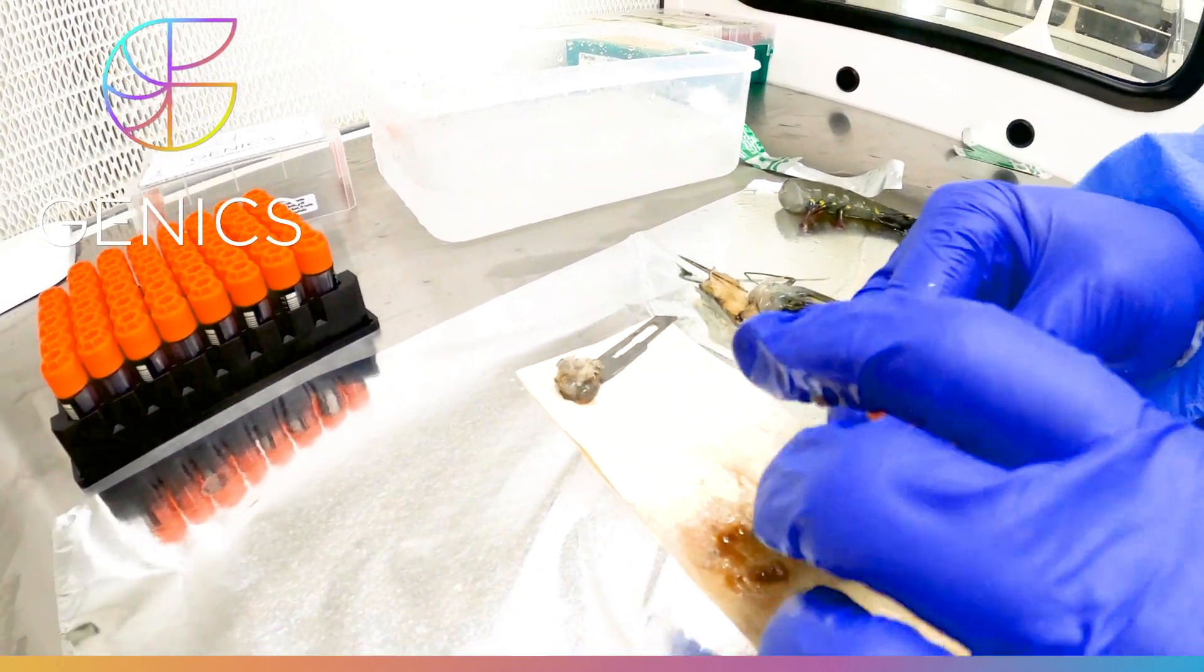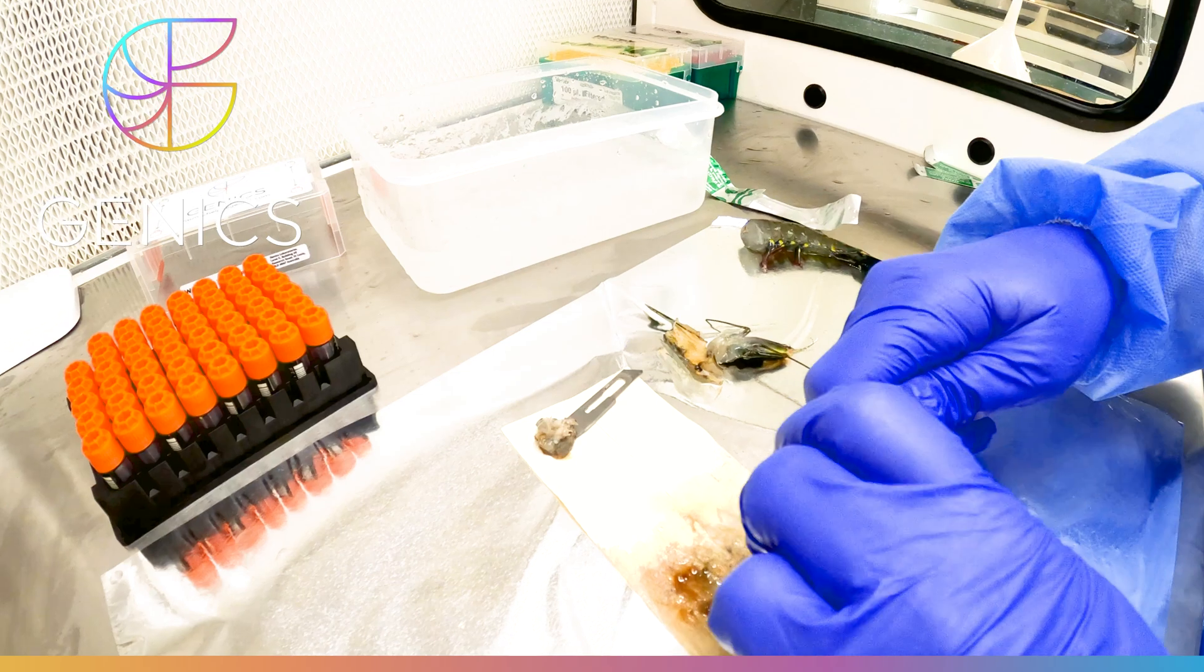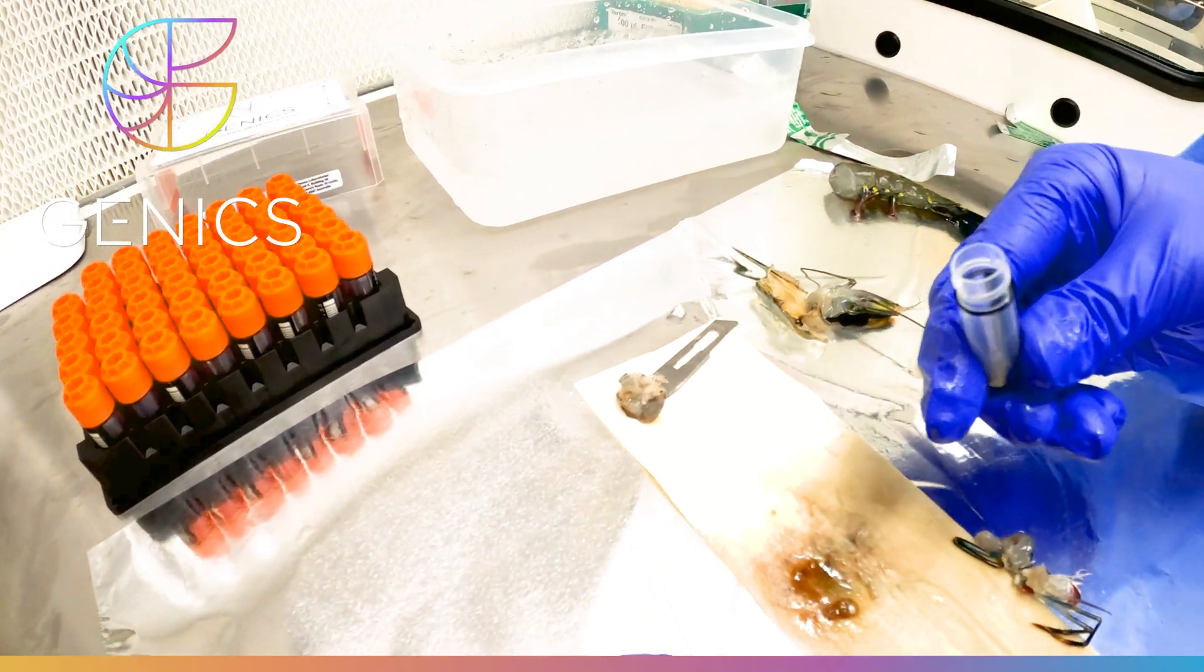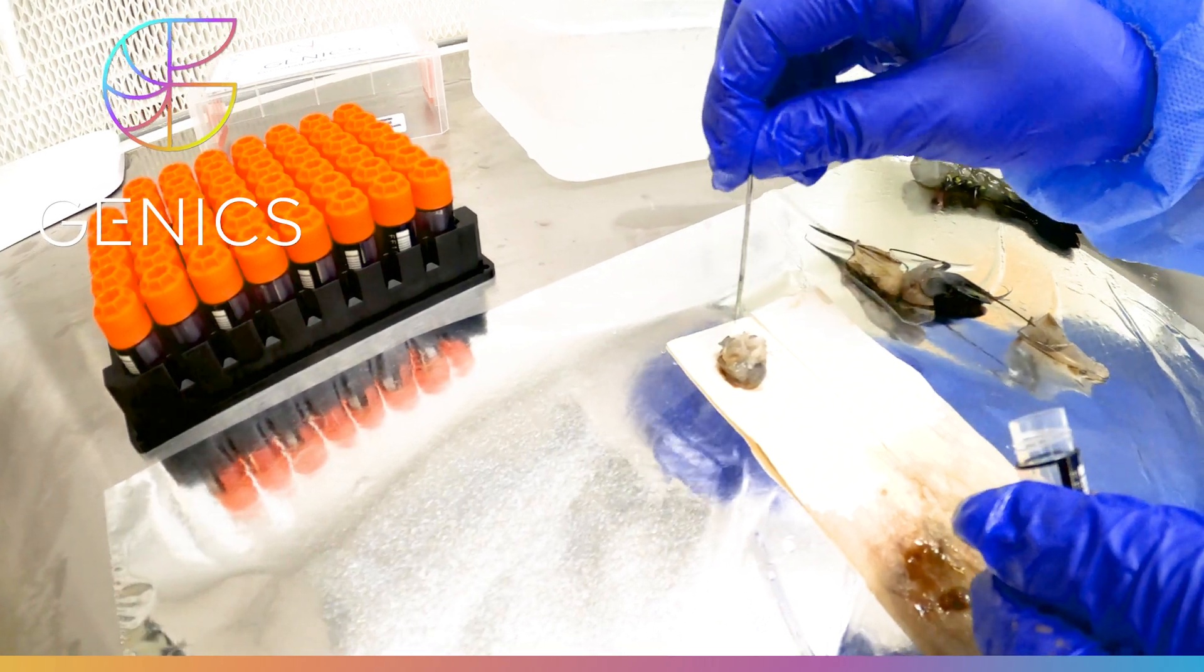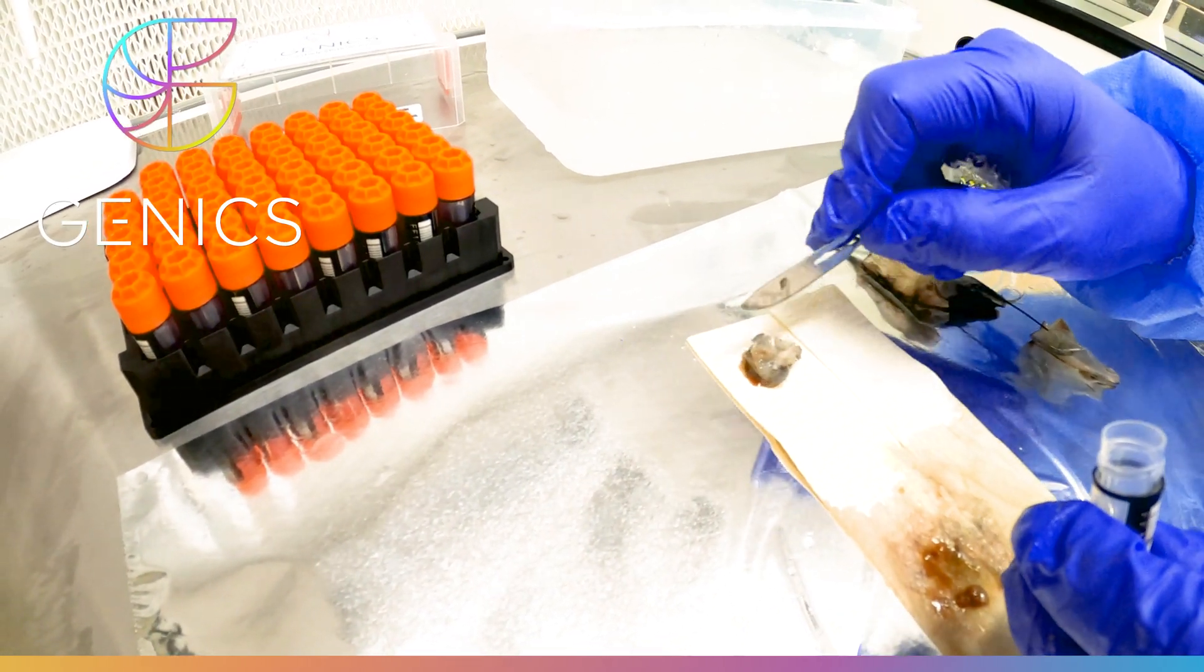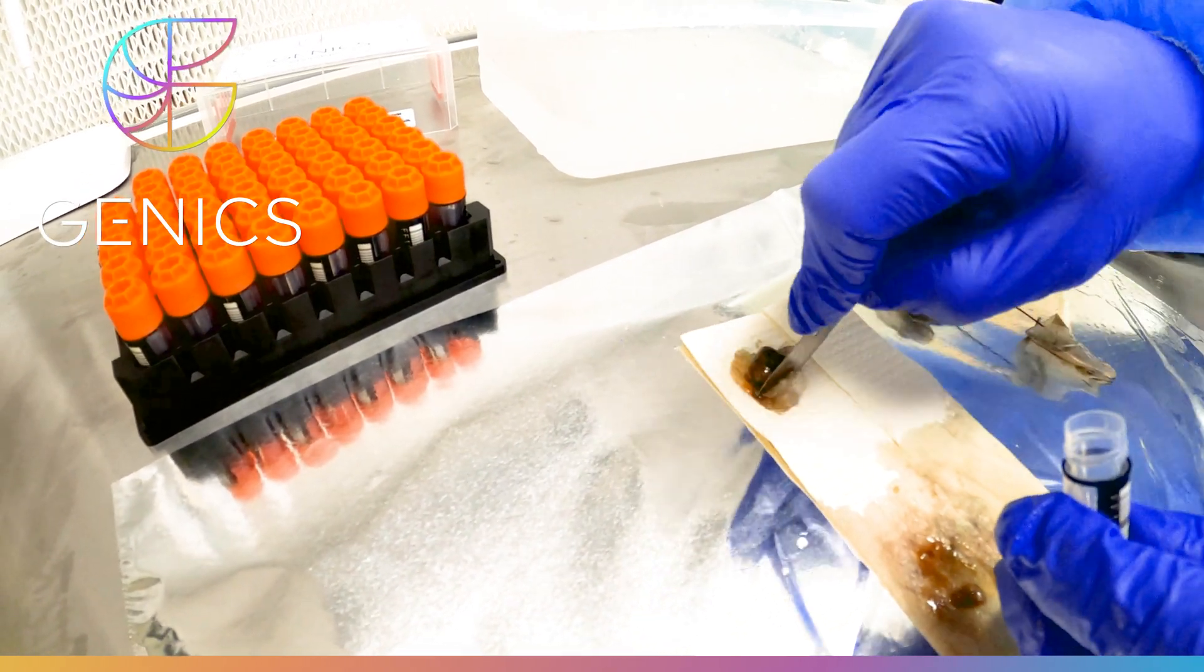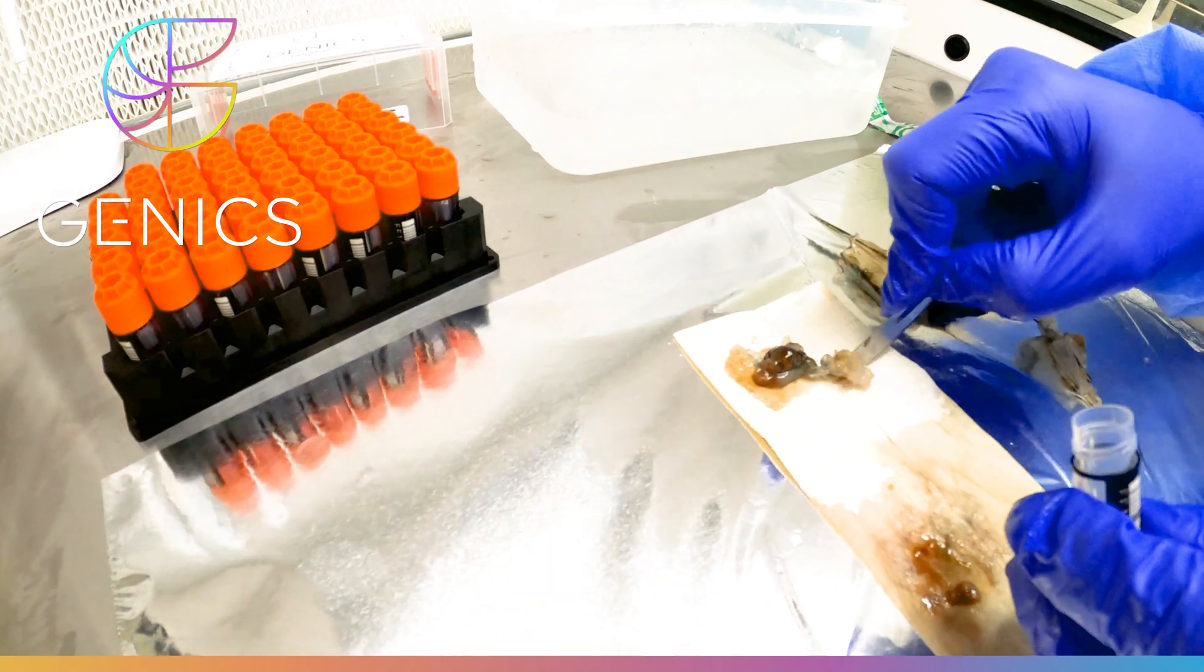So I'll then remove the lid of the tube, replace our sample into there. If the sample's too big you can cut it and put it into the tube in smaller pieces.